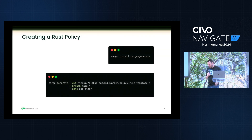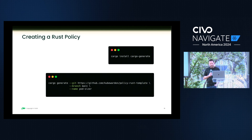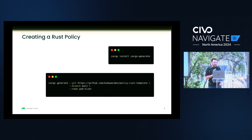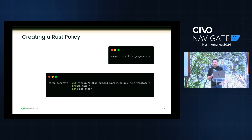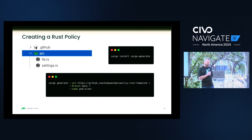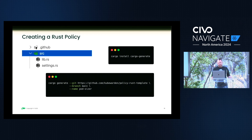To assist with adoption, the Kubewarden team created SDKs for all popular languages, which gives you a template to work from. We use cargo generate with a Kubewarden policy Rust template, and it gives you the ability to scaffold out a project that will produce two files: a settings file and a lib file. That's basically all you need to write your own Rust policy.